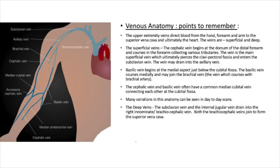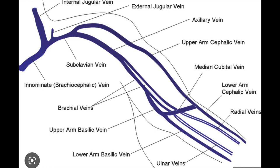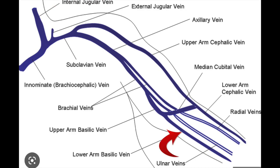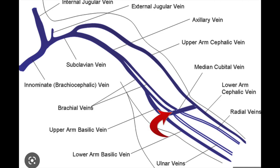Certain anatomy which we need to know. The upper extremity veins are divided into superficial and deep, just like the lower extremity. In the superficial veins you have the cephalic and the basilic. The cephalic begins at the dorsum of the distal forearm and courses in the forearm collecting various tributaries. It usually drains into the subclavian vein high up, and sometimes it may also drain into the axillary vein as an anatomical variation. The basilic vein begins medially just below the cubital fossa, continues medially in the arm, and is many times seen to join the brachial vein. Both the cephalic and the basilic together have a common communicating median cubital vein, usually seen at the cubital fossa, and this anatomy can always show variations in day-to-day scans. We need to document those variations.